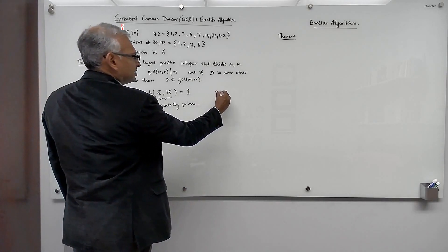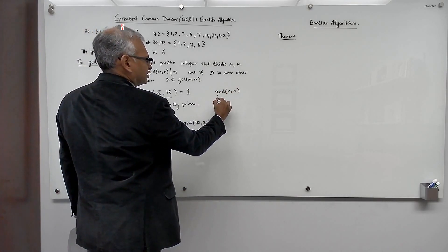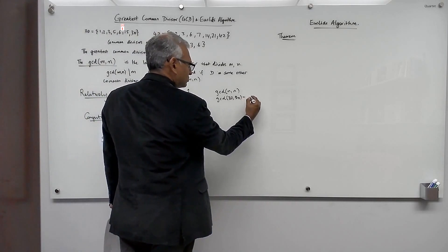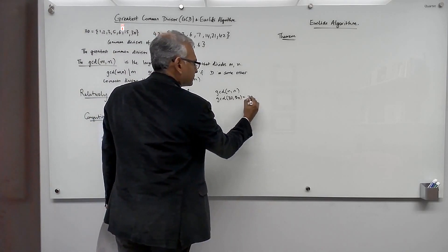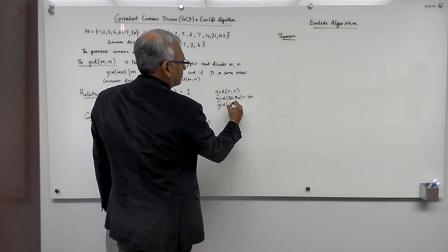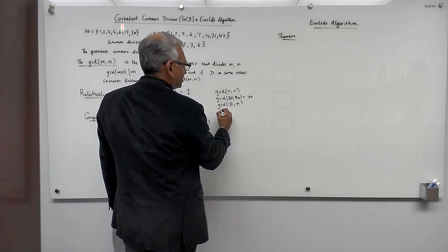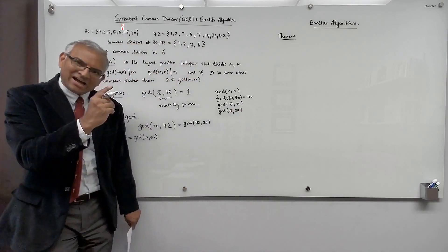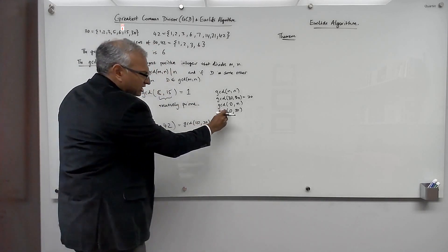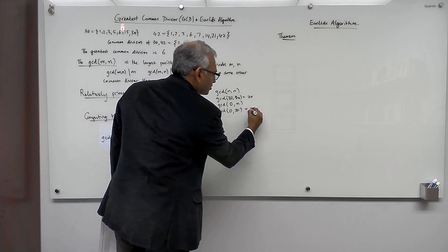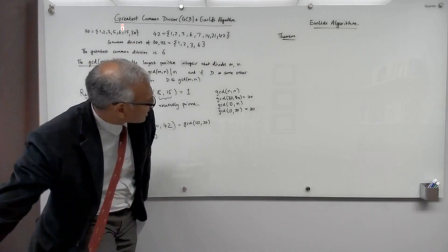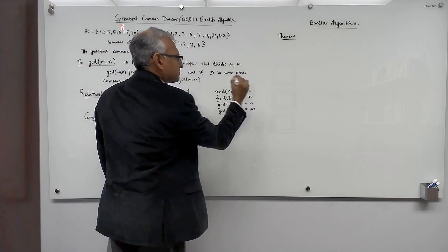What is the GCD of n and n? For example, what is the GCD of 30 and 30? That's trivial to compute — you should easily convince yourself that this is 30. So the GCD of n and n is n. What about the GCD of 0 and n? For example, the GCD of 0 and 30 — any number divides 0, so 30 divides 0 and 30 divides 30, so the GCD of 0 and n is n. These are some simple facts.